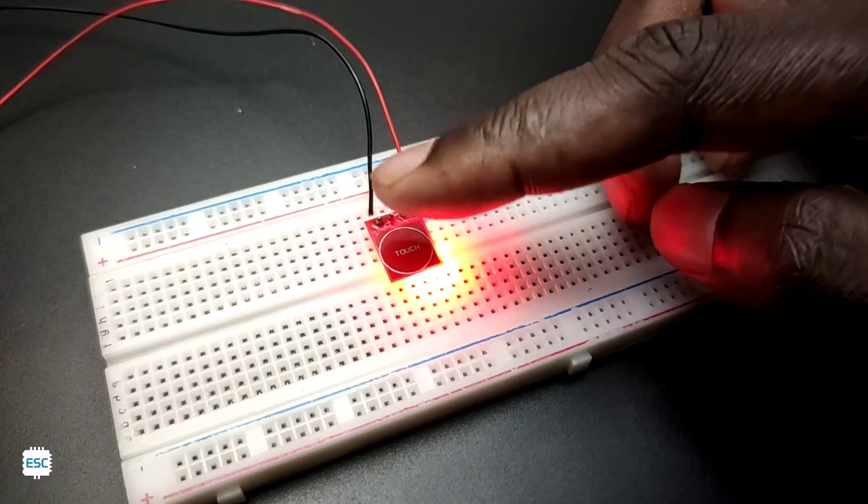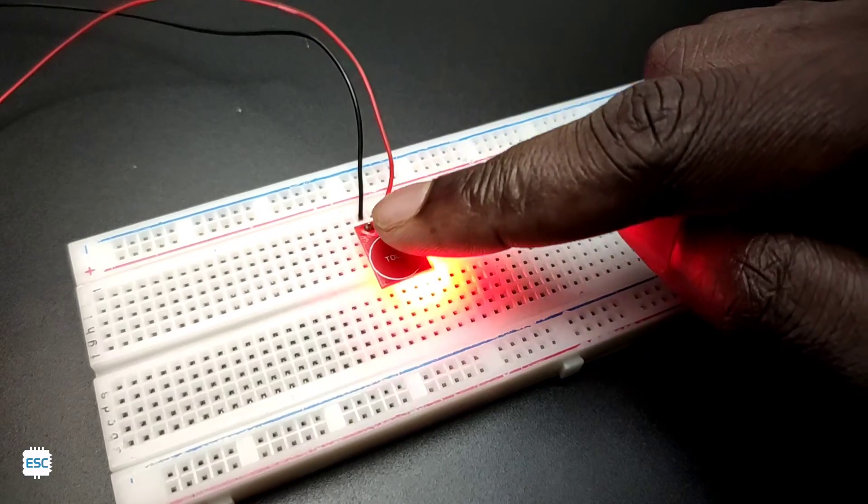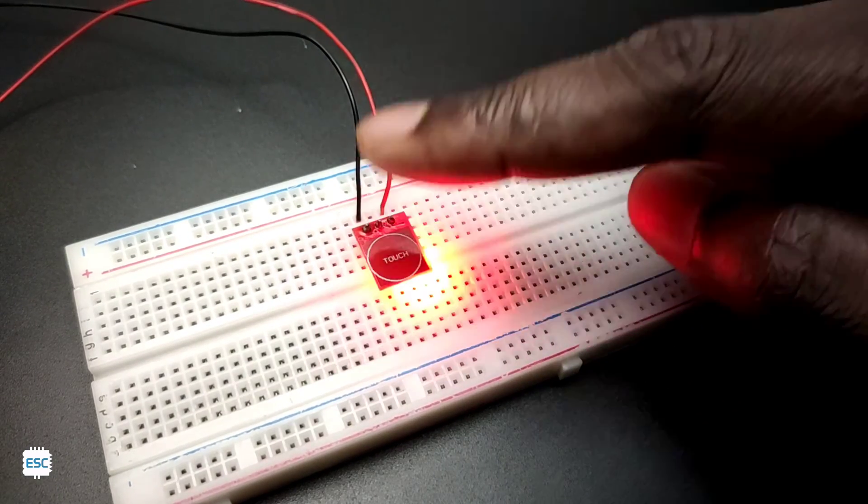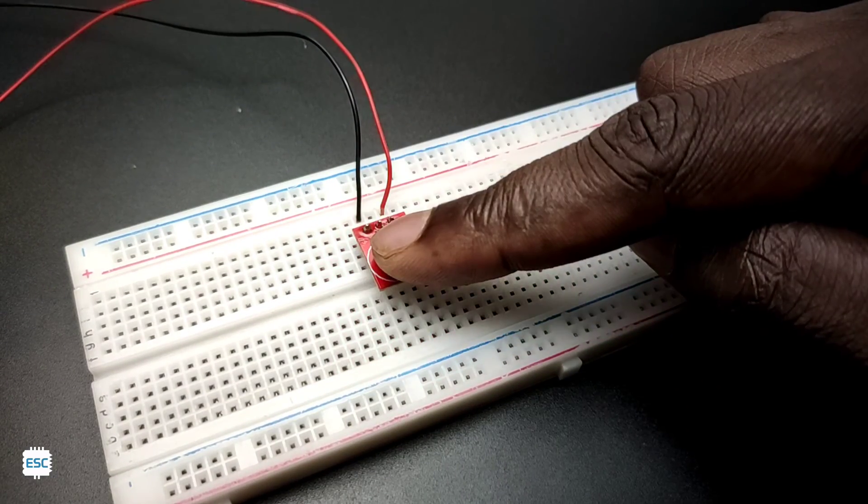You can see the output is already high, and when I touch the module, the output goes low. This is the opposite of the first test.